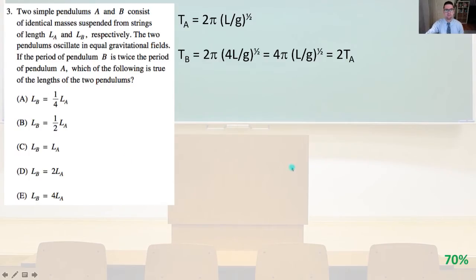Number 3, two simple pendulums, A and B, consist of identical masses suspended from strings of length L of A and L of B, respectively. The two pendulums oscillate in equal gravitational fields. If the period of pendulum B is twice the period of pendulum A, which of the following is true of the lengths of the two pendulums. So we know, which is from the simple pendulum equation, that T of A equals 2 pi and then times the square root of the length divided by g, the acceleration from gravity.